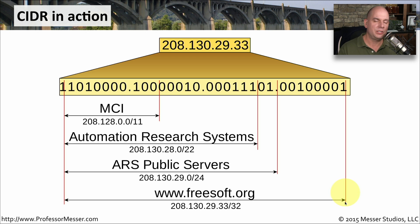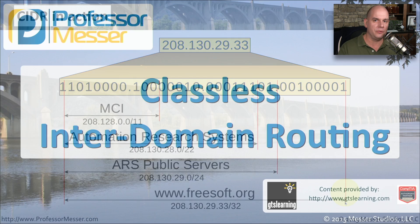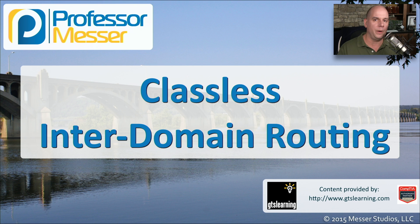And that's how CIDR block notation allows us to create these flexible subnetting schemes so that we can carve out and assign just the right amount of IP address space for what we need.